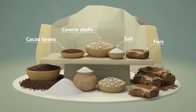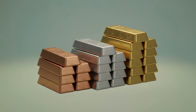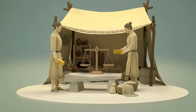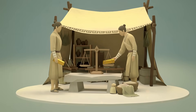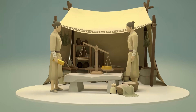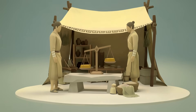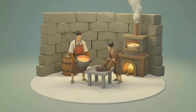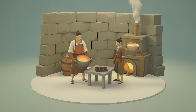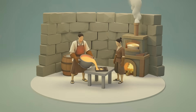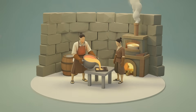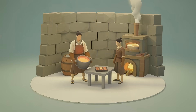These commodities were valued by everyone, compact, and fairly durable. Eventually, metals became the main equivalent — bronze, silver, and gold. They were more convenient because they didn't spoil and took up little space. However, simple exchange of metals had a problem: each time they had to be weighed and checked for purity, which took time and created room for fraud. To solve this, people invented coins — standardized discs stamped by the state, which guaranteed their weight and quality. Coins greatly simplified trade, since now it was enough to count them.